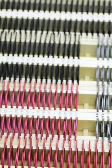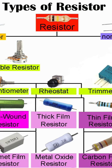A resistor is one of the most fundamental and widely used components in electrical and electronic engineering. It is a passive component whose main function is to oppose the flow of electric current while converting some of the electrical energy into heat.